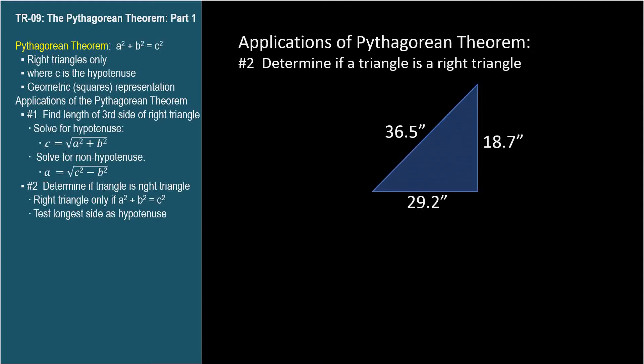And if the triangle is acute, then c squared will be less than a squared plus b squared. Only if the triangle is a right triangle will c squared equal a squared plus b squared.